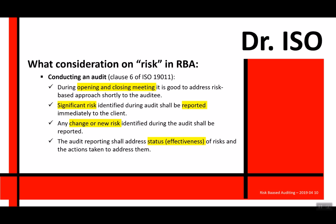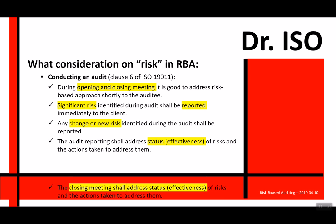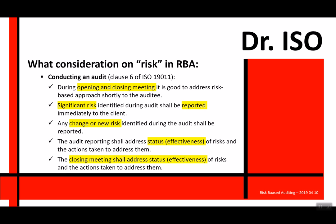When doing the audit reporting, you should address the effectiveness — that means the status of the risk and the actions taken to address them — because this is what an organization is looking for. In the closing meeting, the status and effectiveness of the risk and the actions taken should be summarized to management, because this is the outcome of a risk-based audit.